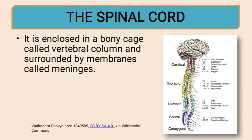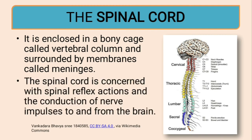The spinal cord is enclosed in a bony cage called the vertebral column, which we have already seen in the earlier lesson on the skeletal system. It is surrounded by membranes called meninges. The spinal cord is concerned with spinal reflex actions and the conduction of nerve impulses to and from the brain.